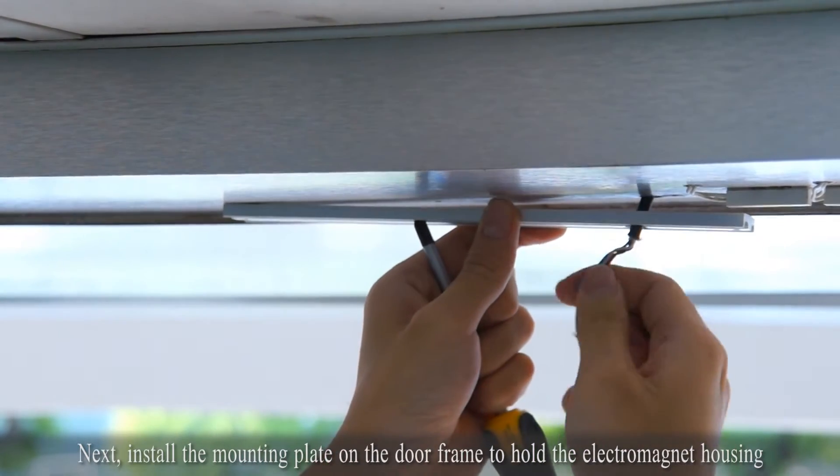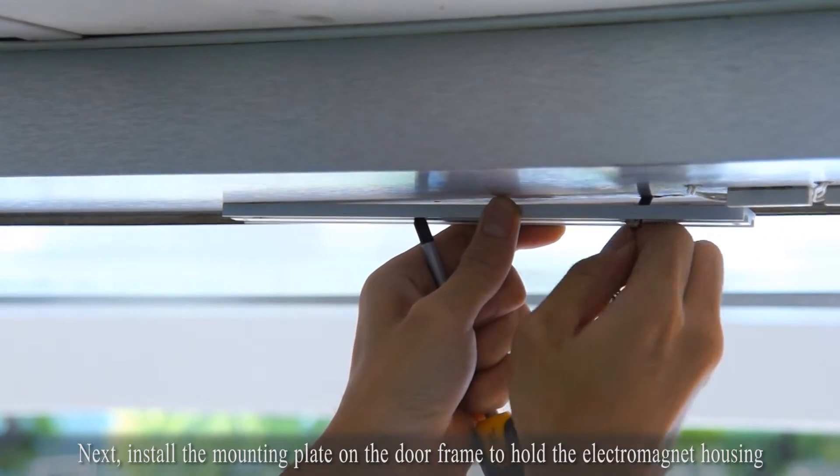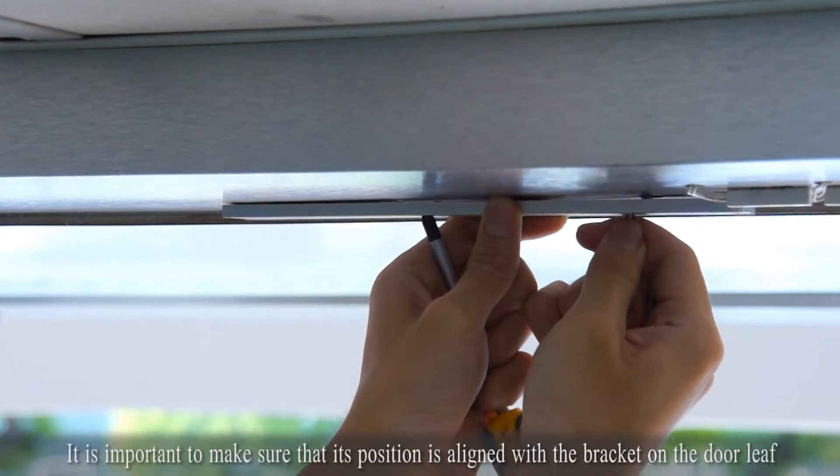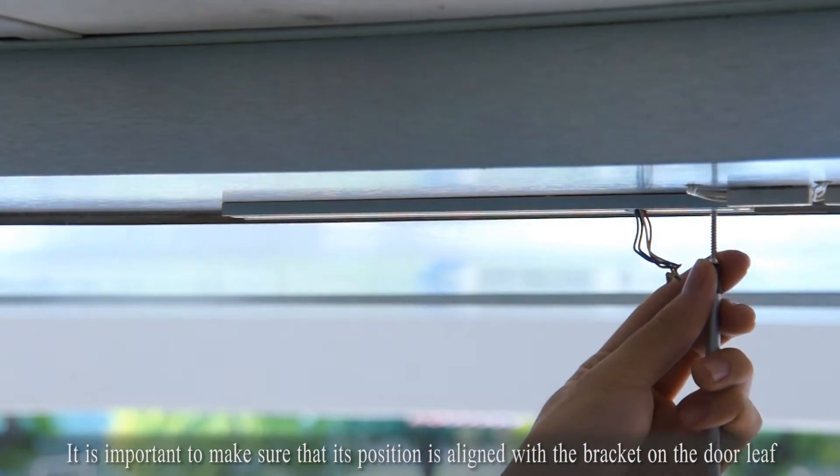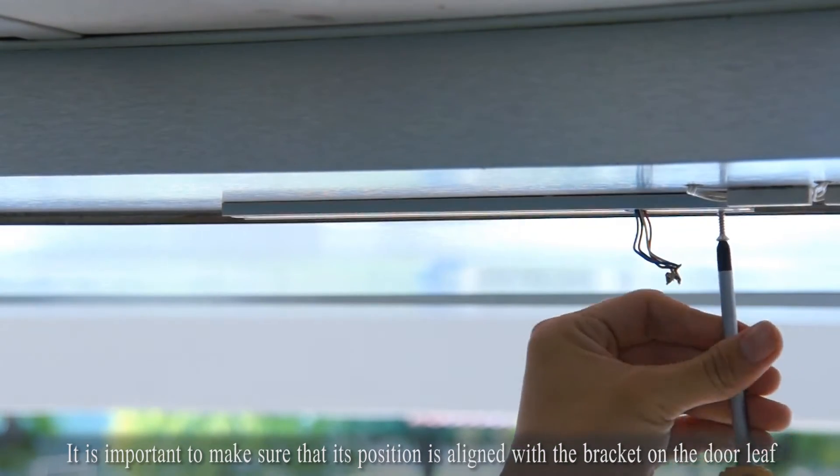Next, install the mounting plate on the door frame to hold the electromagnet housing. It is important to make sure that its position is aligned with the bracket on the door leaf.